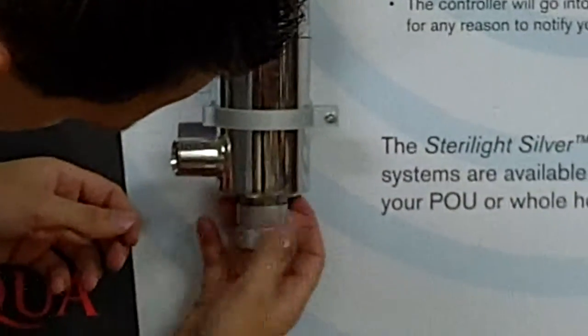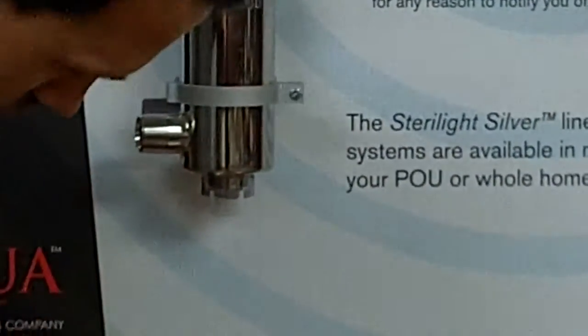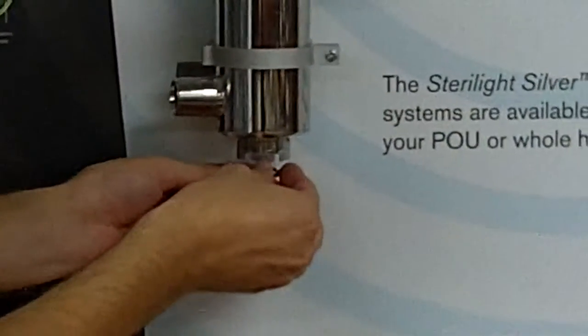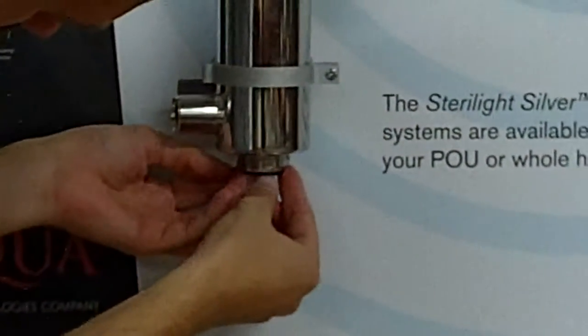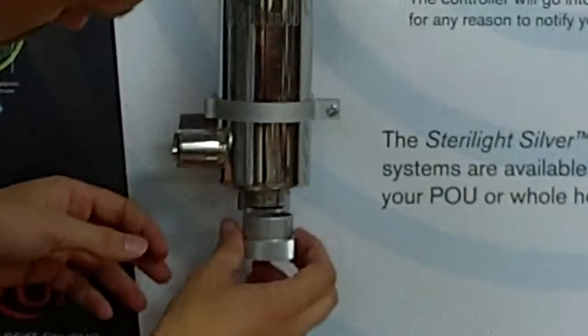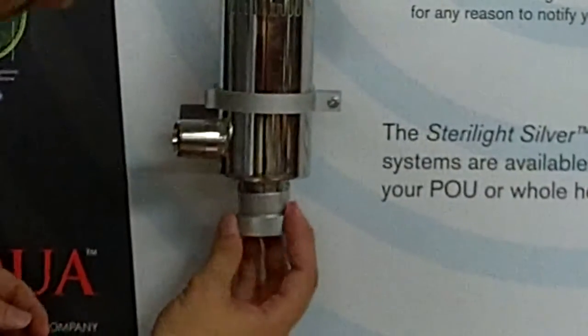Take the bolt off the bottom. And slide the o-ring back on. And we'll just put this bolt back into place here.